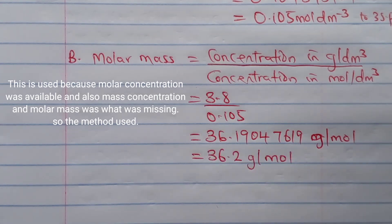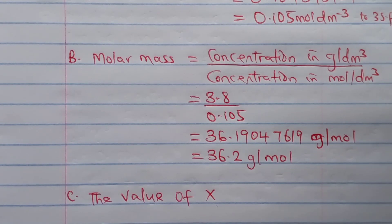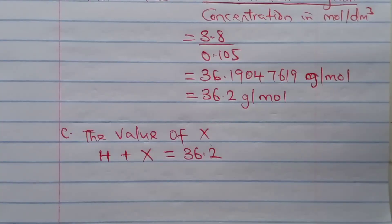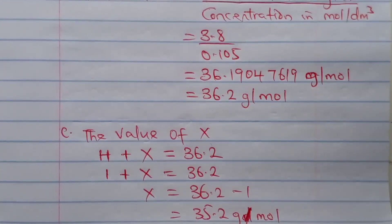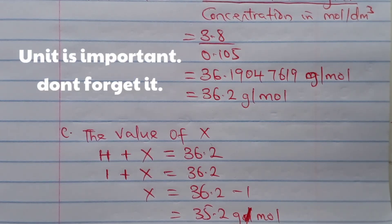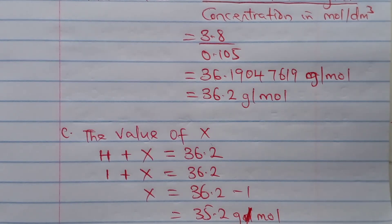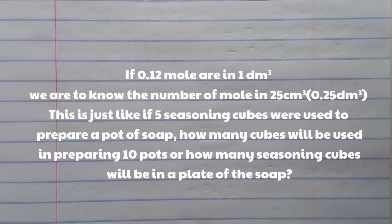Question C asks us to find the value of X. To get the value of X, we use: H + X = 36.2, where H is hydrogen (atomic mass 1) and X is the unknown element's relative atomic mass. Solving gives X = 35.2 grams per mole. The next question is to find the amount of solution B in 25 cm³ — we will use proportion to solve this.